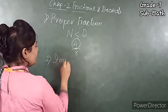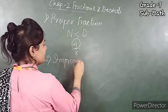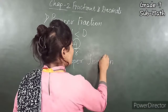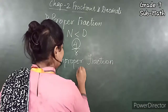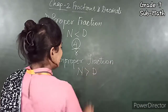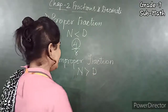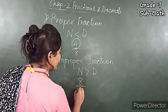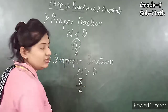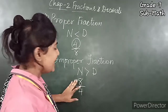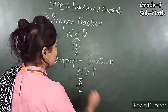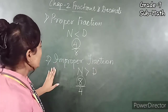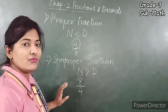Second is Improper Fraction. When the numerator is greater than the denominator, it is called an Improper Fraction. For example, 8 upon 4 — here the numerator is greater than the denominator, so it is called an Improper Fraction.